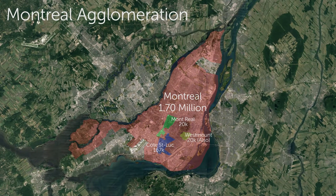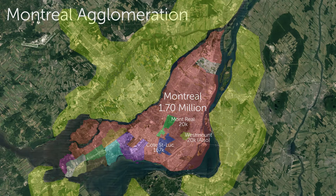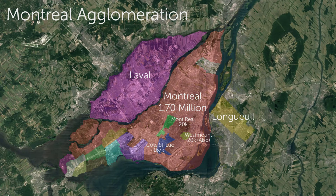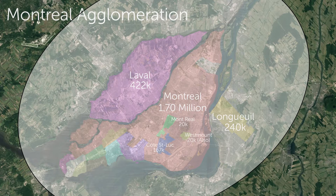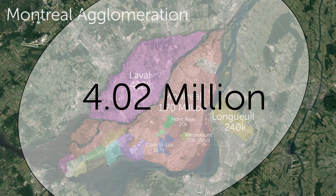The southern part of the island is also dominated by a cluster of independent municipalities. However, most of Montreal's satellite municipalities are actually found outside the central island, on the northern and southern banks of the St. Lawrence River. The largest of them being Laval and Longueuil, with Laval hosting a population of 422k and Longueuil a population of 240k. These are collectively known as Greater Montreal, or the MMC, Montreal Metropolitan Community. Unlike Toronto, Greater Montreal is all part of the same CMA and accounts for a total population of 4.02 million inhabitants.